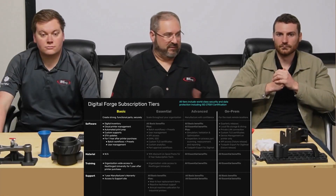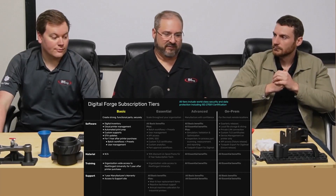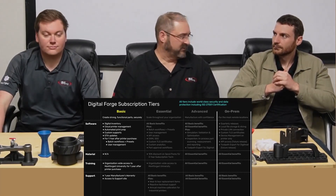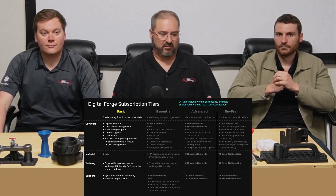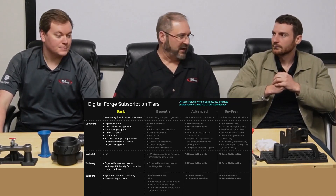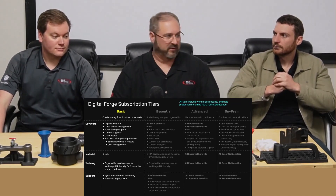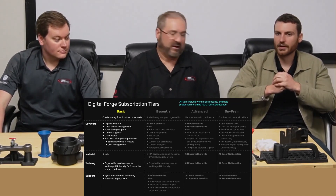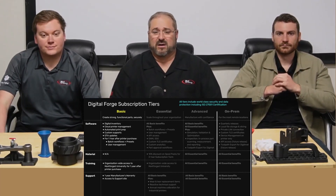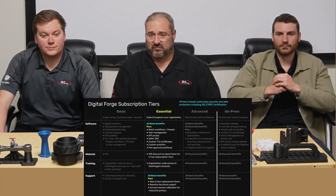That's basically the do-nothing option. This is what a new machine comes with — if you don't purchase any additional subscription, this is what you get. All right, let's cover the Essential tier. Joe, do you want to run down the Essential for us?